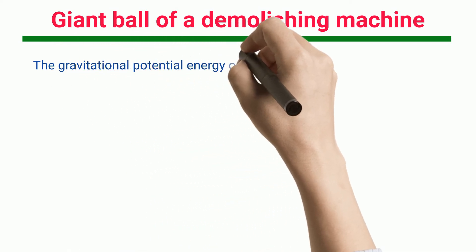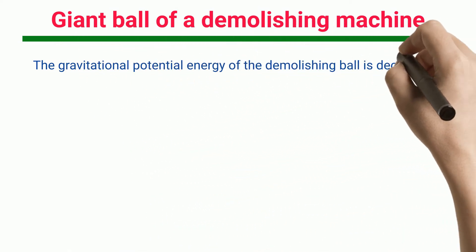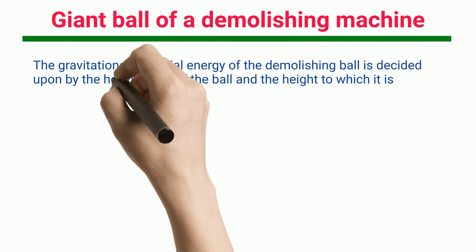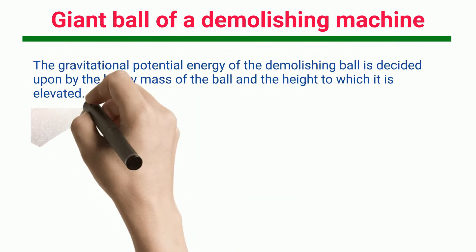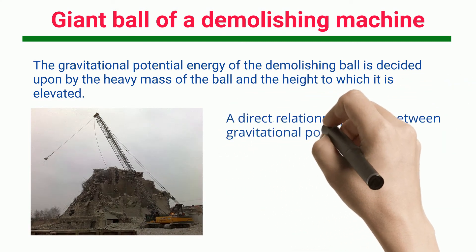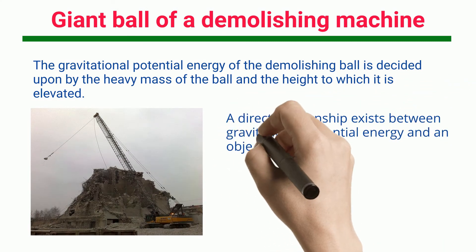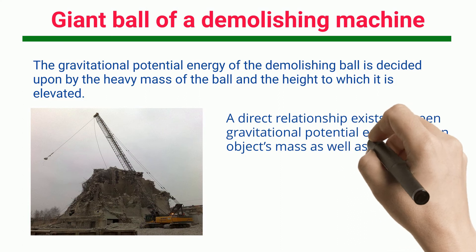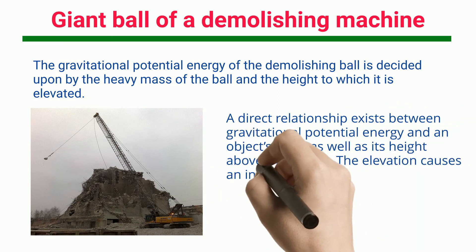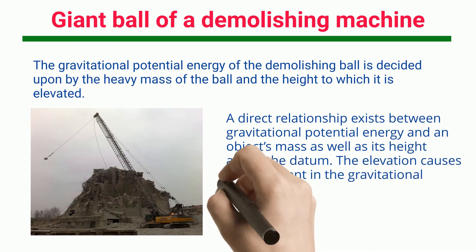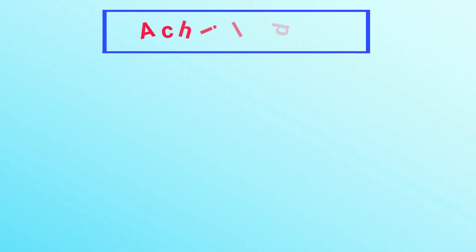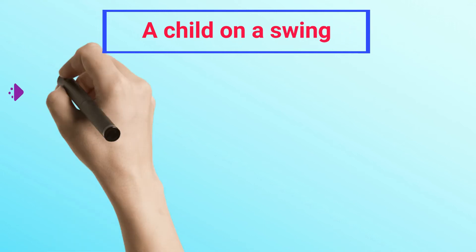The gravitational potential energy of the demolishing ball is determined by the heavy mass of the ball and the height to which it is elevated. A direct relationship exists between gravitational potential energy and an object's mass as well as its height above the datum; elevation causes an increment in the gravitational potential energy.